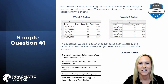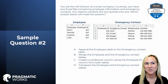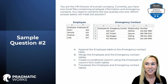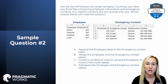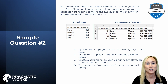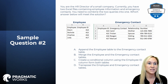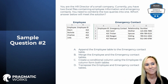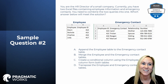Let's take a look at question two. You are the HR director of a small company and currently you have two Excel files containing employee information and emergency contacts. You need to combine the two queries into one — which answer below will meet the solution? You can see there are two tables: employee and emergency contact, with their respective columns. You might have to determine the best way to satisfy the problem and meet the requirement being asked. Pause the video and take a look at the potential answer choices.